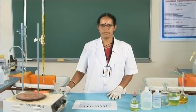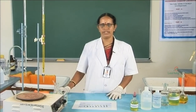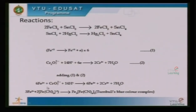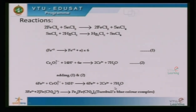The reactions involved in the experiment: In the first reaction, ferric chloride is reduced by stannous chloride to ferrous chloride and stannic chloride. In the second reaction, excess stannous chloride is oxidized by mercury chloride to a white precipitate of mercurous chloride, getting itself reduced to stannic chloride. In the third reaction, ferrous ions are oxidized by dichromate solution to ferric ions, with dichromate being reduced to Cr³⁺. The Fe²⁺ ions combine with the indicator forming the ferro-ferricyanide complex, commercially known as Turnbull's blue.